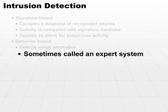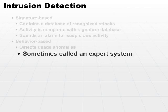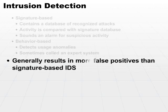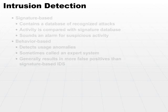When it does find an anomaly, it'll ring the bell. However, it normally will result in more false positives than signature-based IDSs. The reason behind that is anytime it sees something out of the norm, it could be normal behavior, but it thinks it's an anomaly, so it will alert you to that fact.